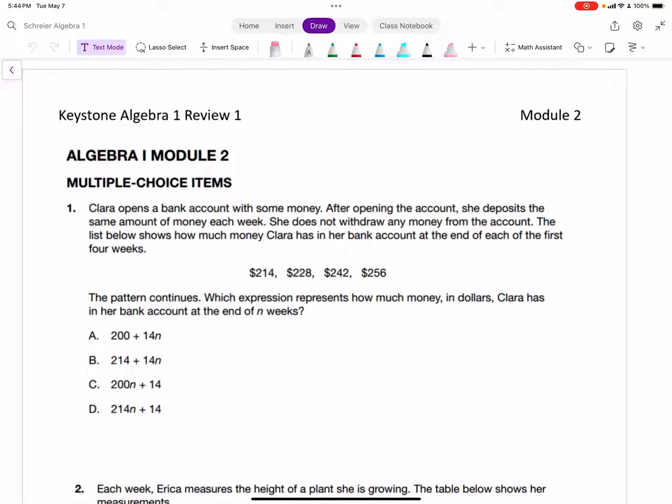We have Clara who opens a bank account with some money. After opening the account, she deposits the same amount of money each week. She does not withdraw any money from the account. The list below shows how much money Clara has in her bank account at the end of each of the first four weeks. The pattern continues. Which expression represents how much money in dollars Clara has in her bank account at the end of N weeks?